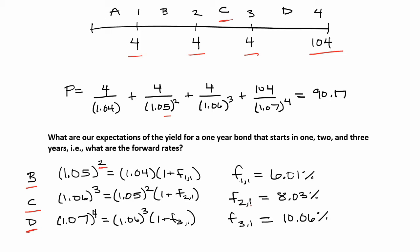We do the same thing to find the forward rate for a one-year bond starting in two years — we expect that bond to have a yield of 8.03 percent, corresponding to period C on our timeline. Finally, the forward rate for a one-year bond starting in three years and continuing for one period — F31 — we expect to have a yield of 10.06 percent, corresponding to period D on our cash flow timeline.